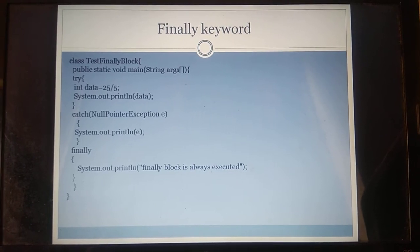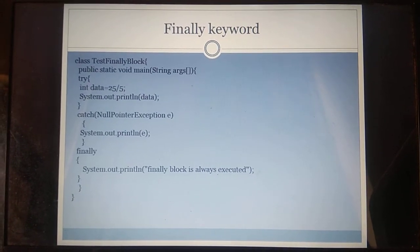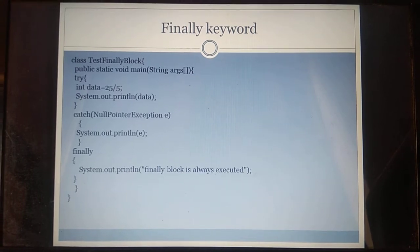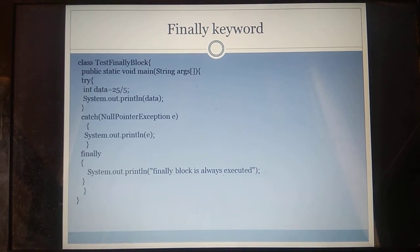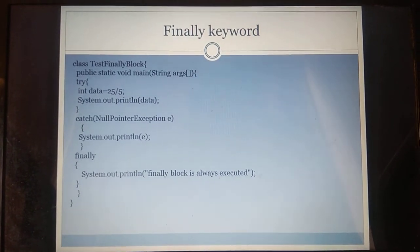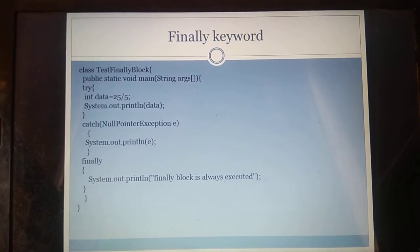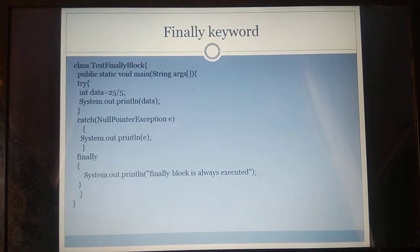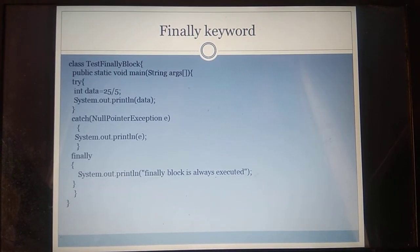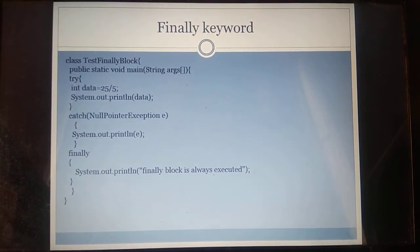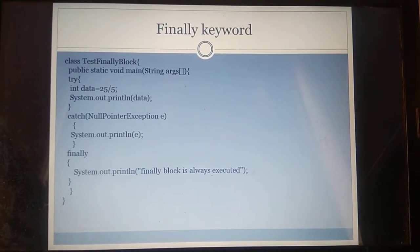In the finally block example, the class is named TestFinalBlock. Inside public static void main, we have a try block performing the division operation 25 divided by 5. The result 5 is stored in an int variable called data and printed as output. There is no exception in this program. Note that if you divide by 0, you would get a divide-by-zero exception; if you operate on a null string, you'd get a NullPointerException.